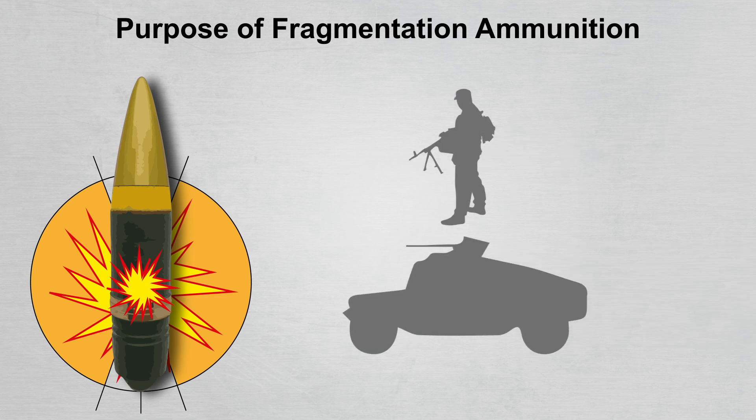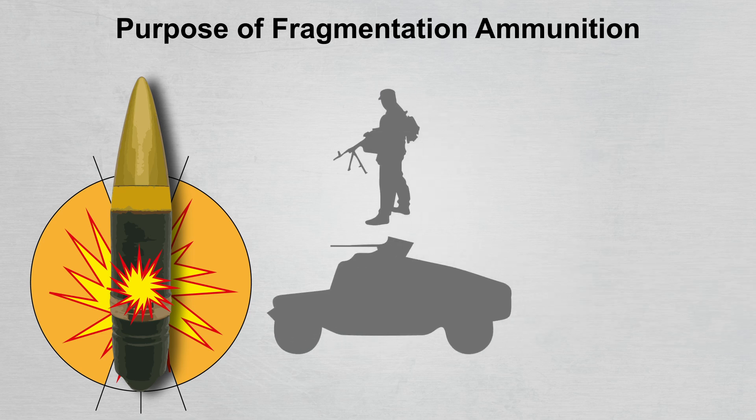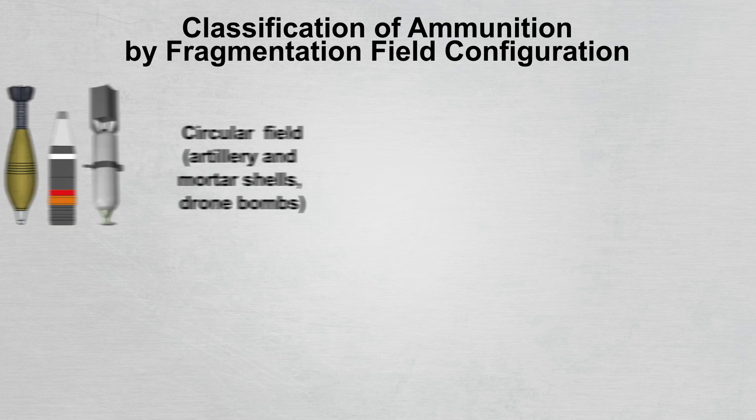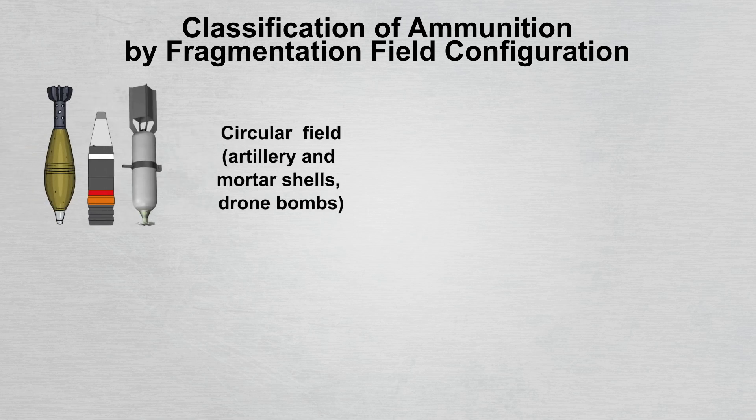The purpose of fragmentation ammunition is to defeat almost all types of targets, with the exception of concrete, underwater, and heavily armored ones. Fragmentation munitions cause damage primarily through high-velocity streams of damaging elements. These damaging elements are either natural or specified crushing fragments, or ready-made sub-projectiles.